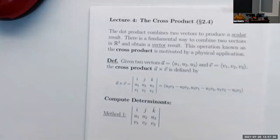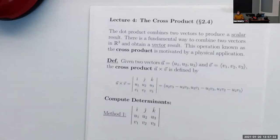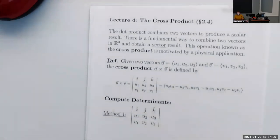Let's get back to class. We're going to learn about a new type of vector multiplication called the cross product. With the cross product, we combine two vectors and get another vector. This is going to be different from the dot product.